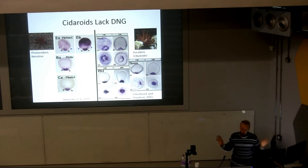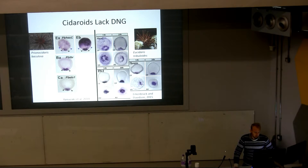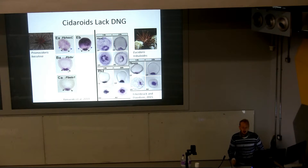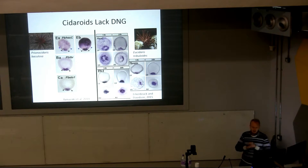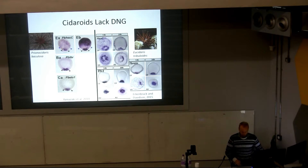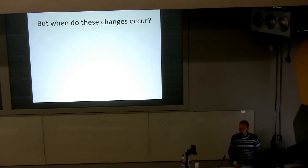It's recently been demonstrated that the double negative gate is not present in cidaroids—and not just one cidaroid, but actually two: Prionocidaris baculosa from Japan and Eucidaris tribuloides. We know it doesn't exist because we have overlapping expression patterns of HES-C and genes which are downstream of it in euechinoids—T-brain and S1. Furthermore, PMR1, the initial input into the double negative gate, is not present in the genome of Eucidaris tribuloides.